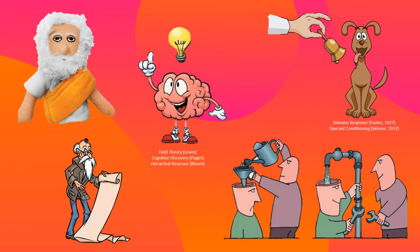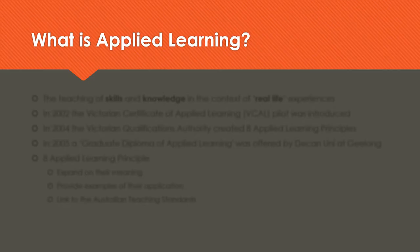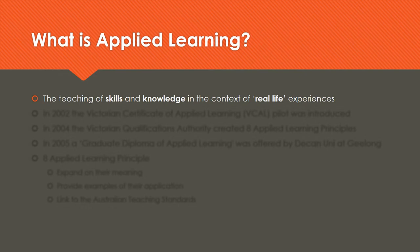This learning theory is called Applied Learning. According to the Victorian Curriculum and Assessment Authority, Applied Learning is the teaching of skills and knowledge in the context of real life experiences. Learners apply what they have learnt by doing, experiencing or relating it to the real world. It's an approach which contextualises learning in a way which empowers and motivates students, while assisting them to develop key skills and knowledge required for employment, further education and active participation in their communities.